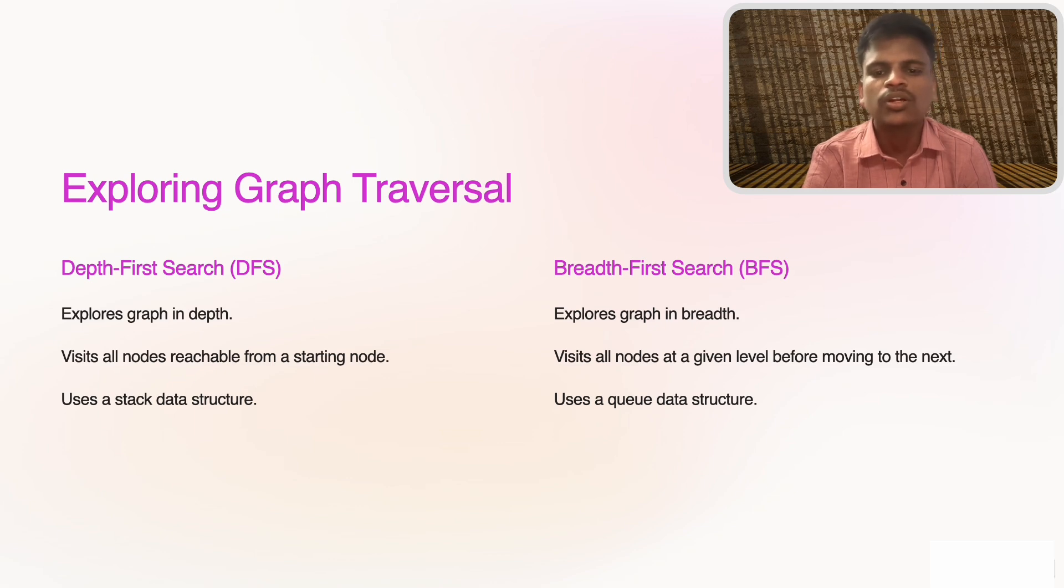Exploring graph traversal: to explore or search through a graph, we use traversal algorithms. The two most common ones are: Depth-First Search (DFS), which explores as deep as possible in one branch before backtracking. Imagine a maze where you keep going down one path until you reach a dead end, then you go back and try a different path. DFS is often implemented using a stack structure.